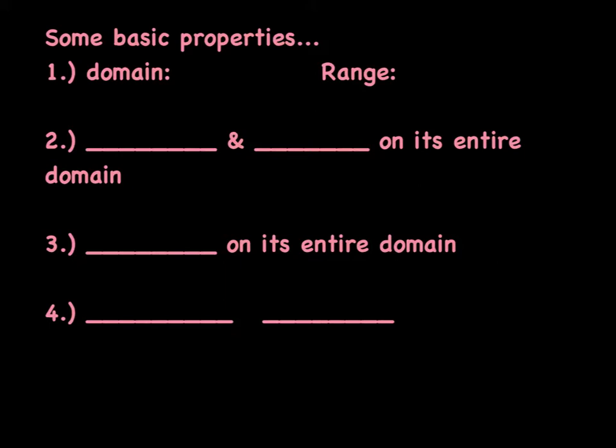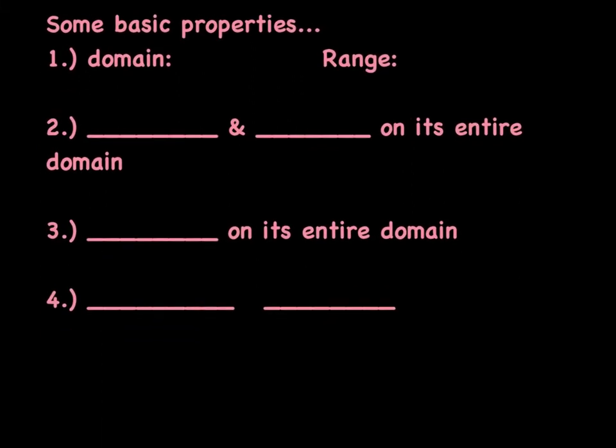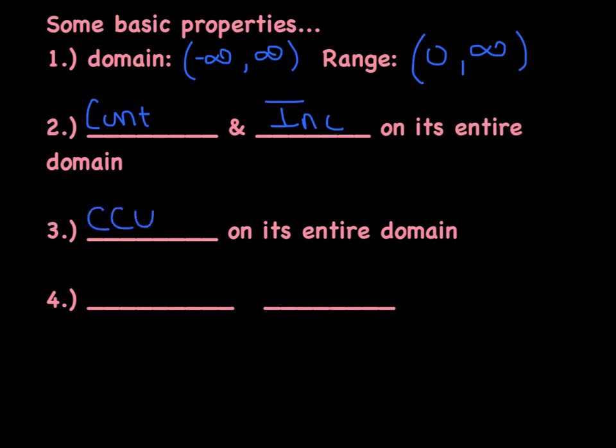All right, some real basic properties that I want us to have down pat. And as you've got that picture fresh in your mind, the domain, the graph extends infinitely to the left and infinitely to the right, so our domain is all real numbers. The range, however, does not include the 0. So I'm going to use a parenthesis, and then it does extend infinitely high. We're going to say that the function is continuous and increasing on its entire domain. We're also going to say that the curve is concave up on its entire domain. In other words, this function is increasing at an increasing rate, which is kind of exciting.